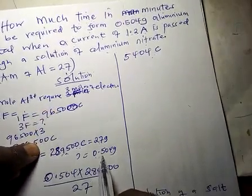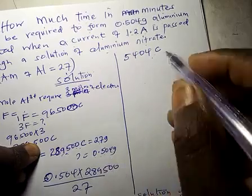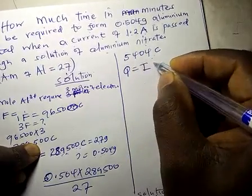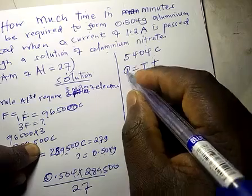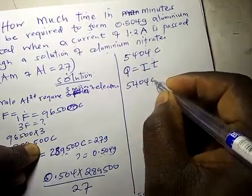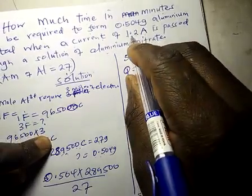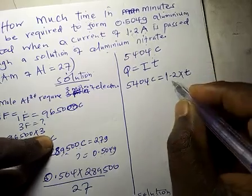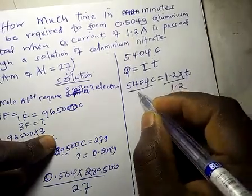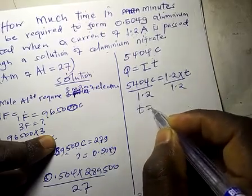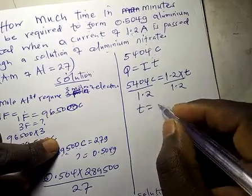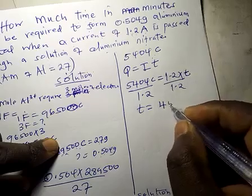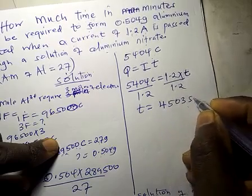This is the quantity of electricity for 0.504 grams. We know quantity of electricity equals current times time. So 5,404 coulombs equals 1.2 times time. Dividing by 1.2, time equals 4,503 seconds — remember time is in seconds.